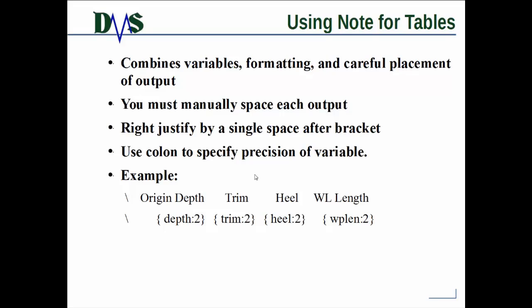You can also use a colon to specify the precision of the variable. How many numbers do you want it to print it out by? Is this going to be three decimal points, two decimal points? And in this case, I've got depth colon two for two decimal points. And so this shows you an example of how you can combine the whole thing together.